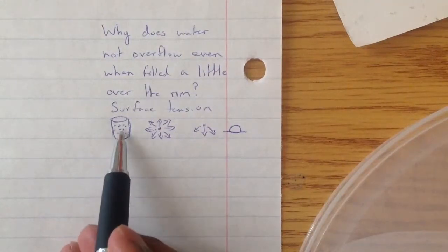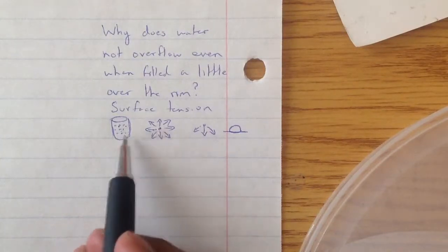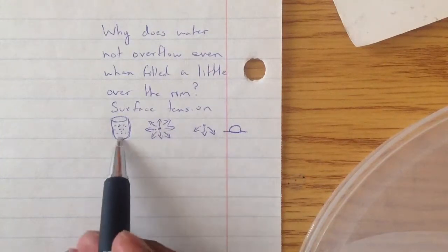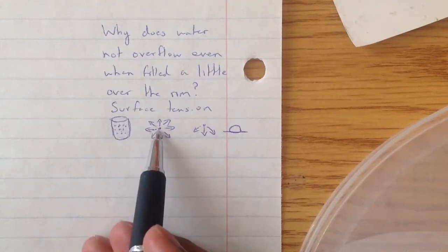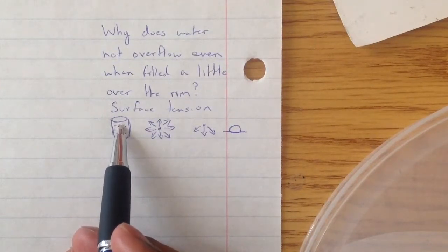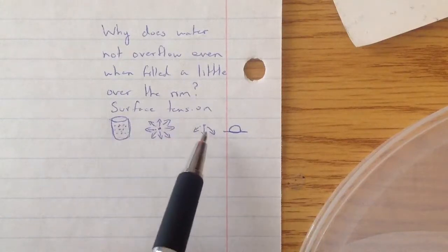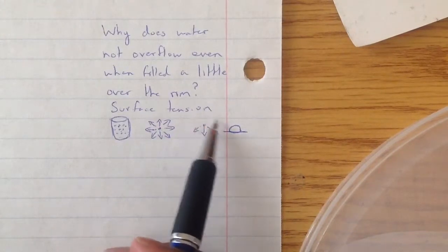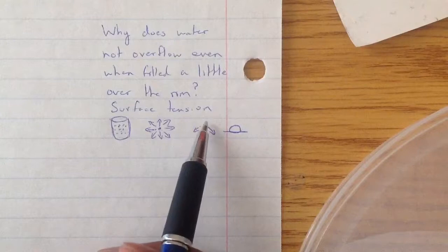If you have a water molecule in the middle, it's being pulled on in every direction by every other water molecule. But if you have a water molecule at the very top, at the very surface of the water, there's nothing above it to pull it, no water molecule above to pull it.